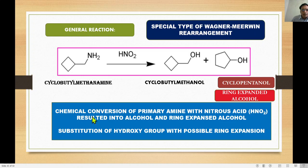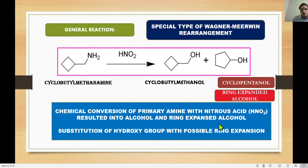The chemical conversion of primary amine with nitrous acid results in an alcohol and ring-expanded product. In some cases, ring-contracted product is also possible. In both cases, substitution of the hydroxy group occurs with possible ring expansion or contraction.